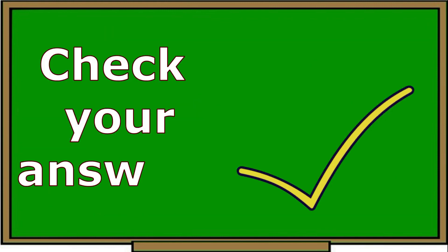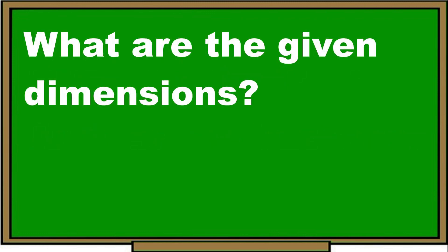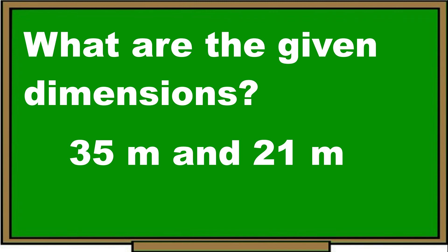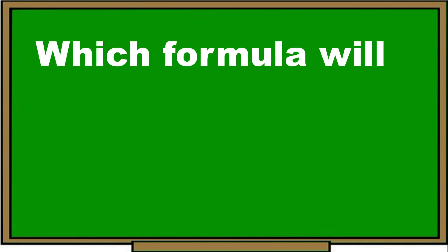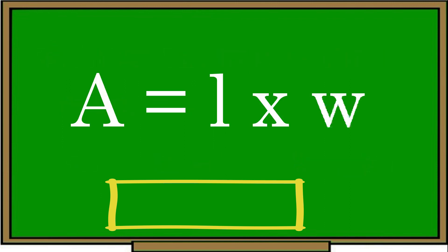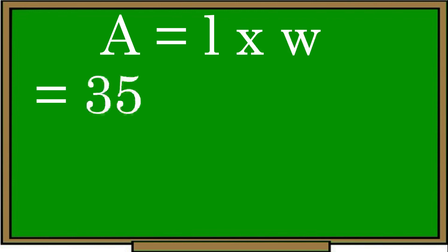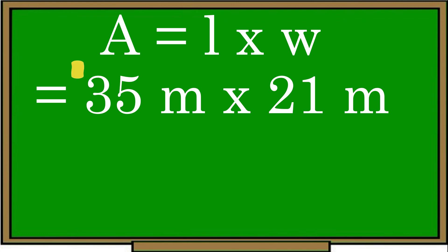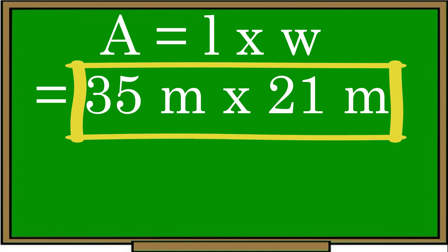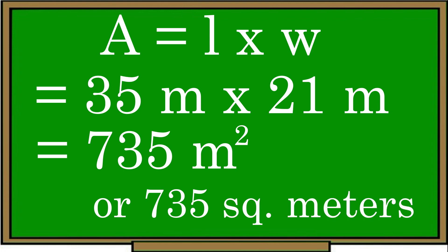Let's check your answers. For the backyard, the given dimensions are 35 meters and 21 meters. We use the formula of a rectangle: area equals length times width. Substituting: 35 meters times 21 meters equals 735 square meters. The area of the backyard is 735 square meters.